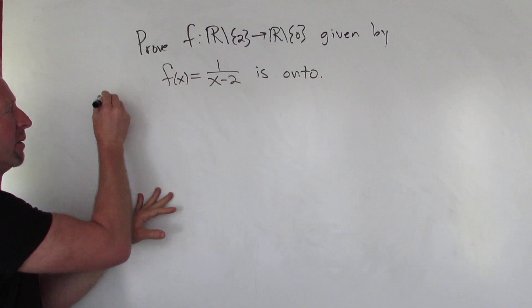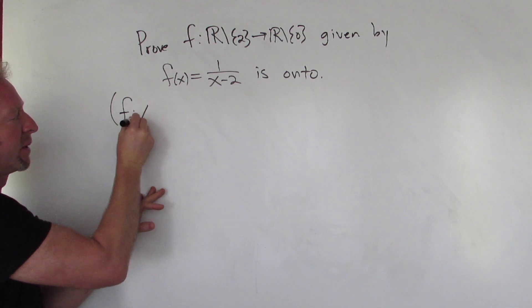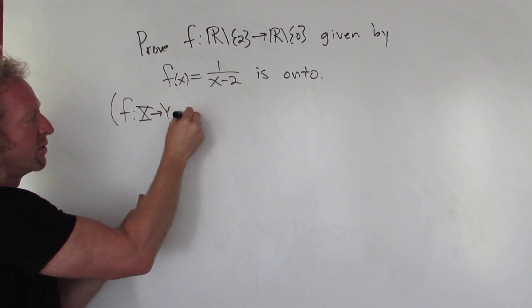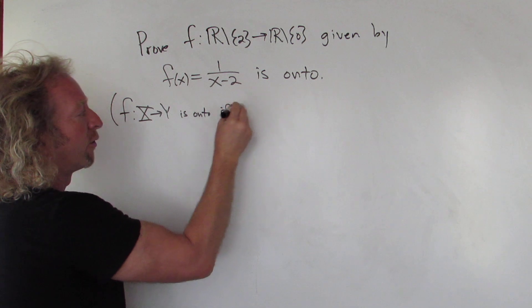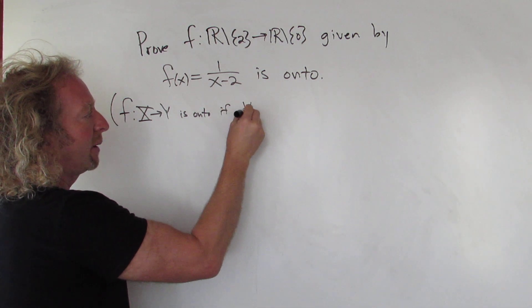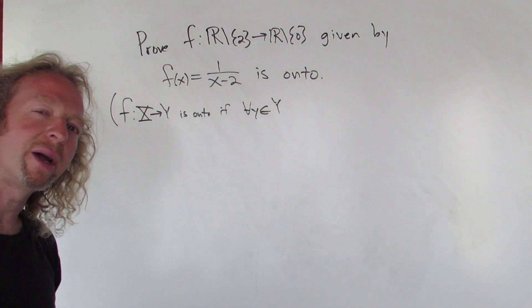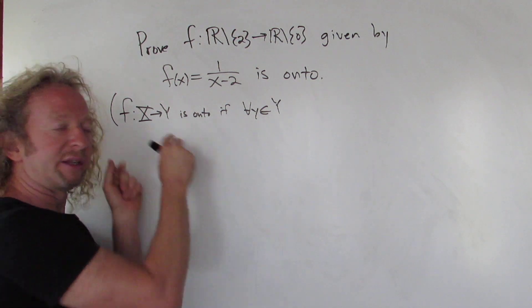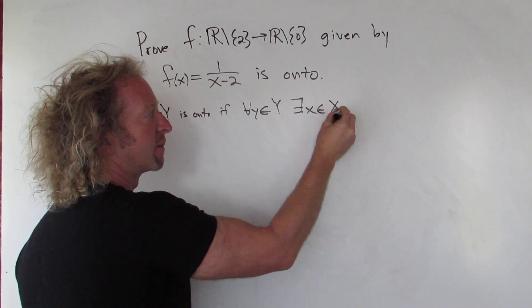We'll write the definition down here in parentheses. We say f from capital X to capital Y is onto or surjective if for all little y in capital Y — recall capital Y is called the codomain — we can find some element little x, so there exists a little x in capital X,